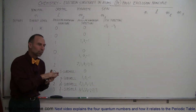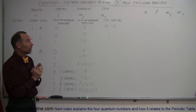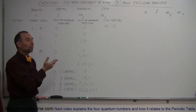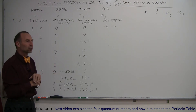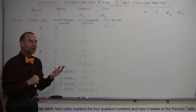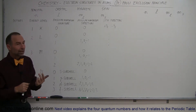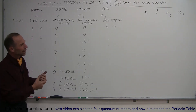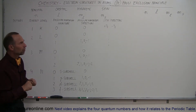Since each orbital can only contain two electrons, and each electron either has a spin up or spin down, another way of looking at the Pauli Exclusion Principle is that you can only have a maximum of two electrons in each orbital, and only if those two electrons have opposite spin.